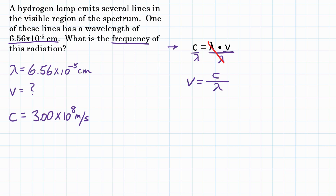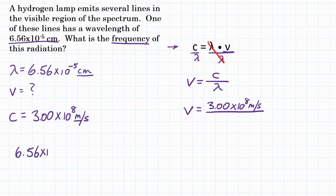Now we can plug in our values. Frequency equals speed of light, 3.00 times 10 to the 8th meters per second, divided by wavelength. Our wavelength is 6.56 times 10 to the negative 5 centimeters. We are dealing with meters in the speed of light, so because those units of length do not match up, they will not cancel out like we want them to. We need to convert our wavelength by multiplying by a conversion factor.